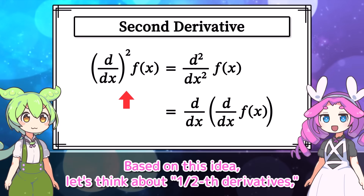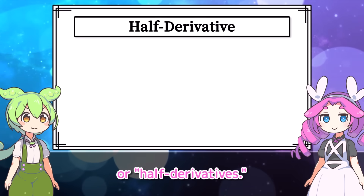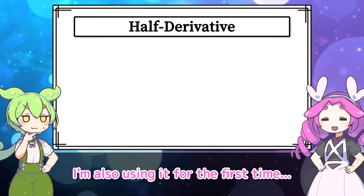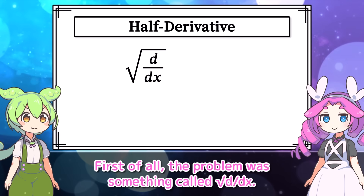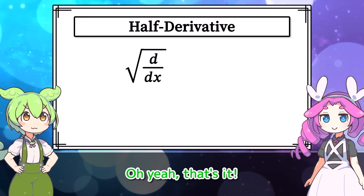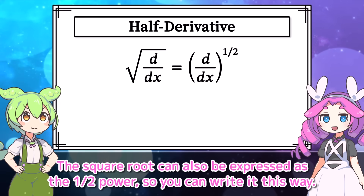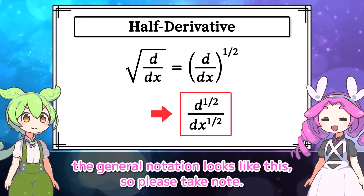Based on this idea, let's think about one-half derivatives. The problem was something called the square root of d by dx. The square root can also be expressed as the one-half power, so you can write it this way. The general notation looks like this, so please take note.